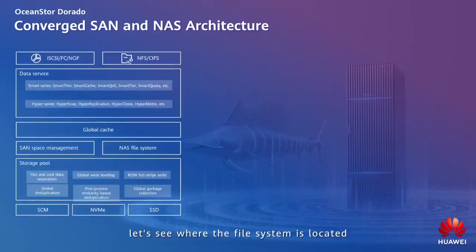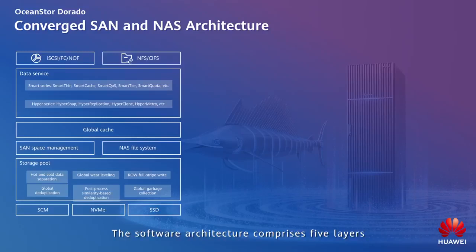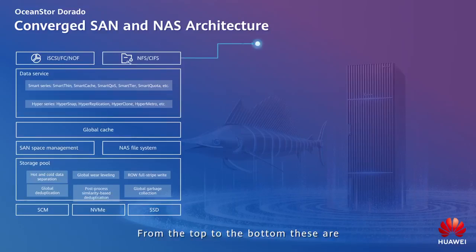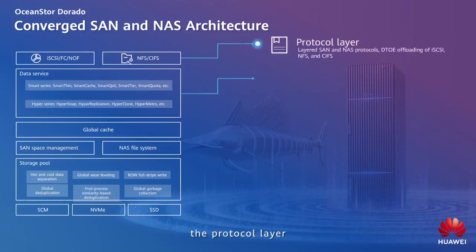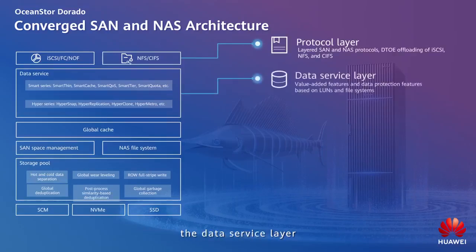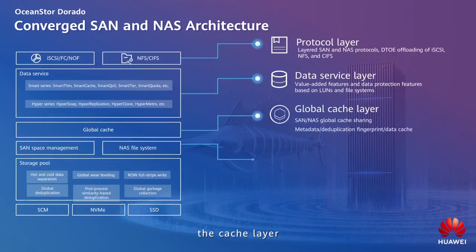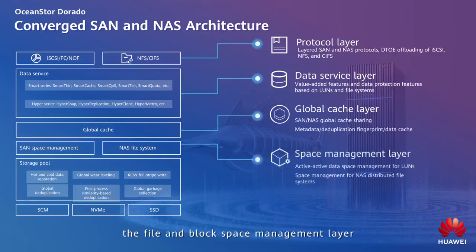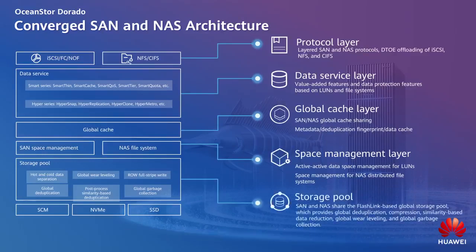Let's see where the file system is located in the OceanStore Dorado storage architecture. The software architecture comprises five layers. From the top to the bottom, these are the protocol layer, the data service layer, the cache layer, the file and block space management layer, and the storage pool layer.